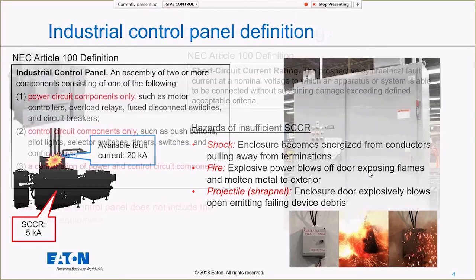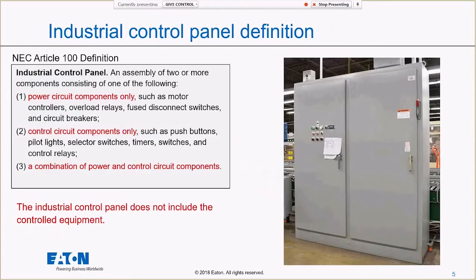Short circuit current rating is the prospective fault current to which my assembly can be connected without sustaining damage exceeding defined acceptable criteria. Those criteria are shock, fire, and projectile hazards. That's what I'm trying to avoid with an adequate short circuit current rating. We'll start with definitions, the first being the definition of an industrial control panel.